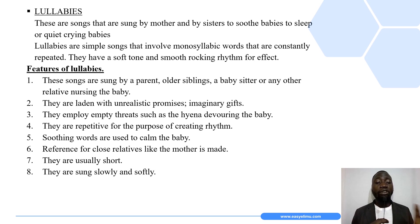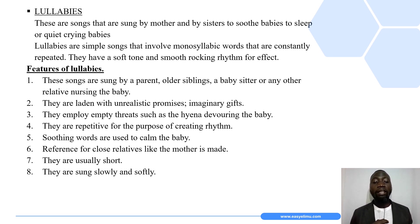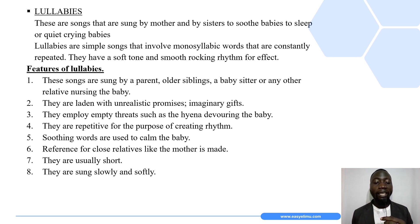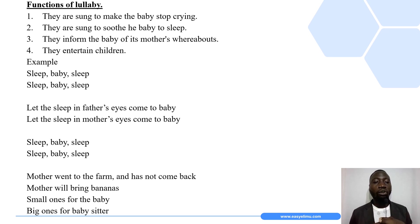Another feature is that soothing words are used to calm the baby. The next feature is that reference to close relatives like the mother or sometimes the father is made. Lullabies are also short — usually brief — and the last feature is that they are sung slowly and softly.